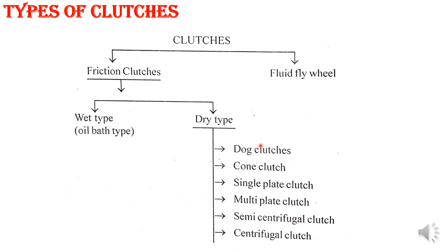Different types of clutches: in the friction clutch we have wet type and dry type. The wet type is the oil bath type — whenever the fluid comes in contact it is called the wet type. In the dry type we have dog clutches, cone clutches, single plate clutches, multi-plate clutches, semi-centrifugal clutches, and centrifugal clutches.